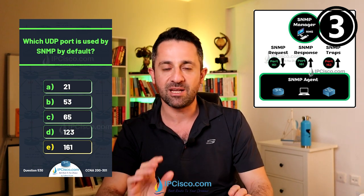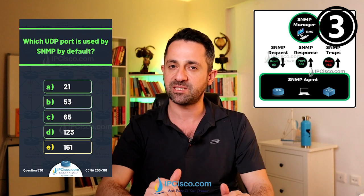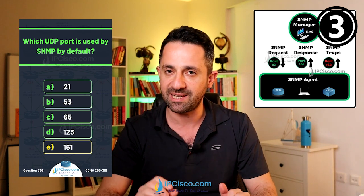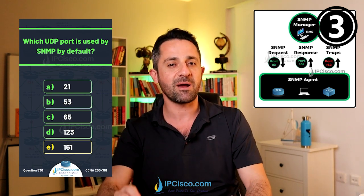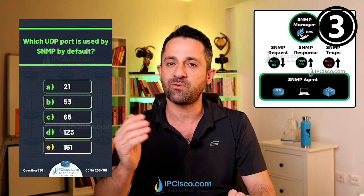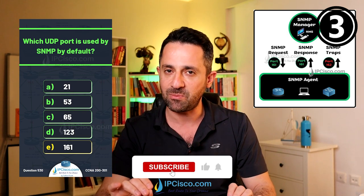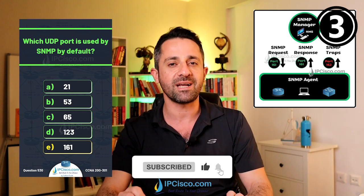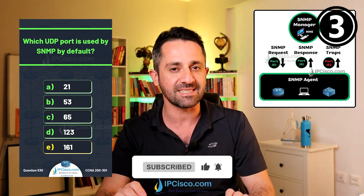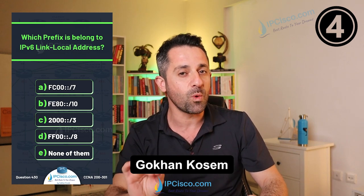Our answer is 161. Port 161 is used by SNMP to send SNMP requests and get SNMP responses from the SNMP agent. However, for trap and inform messages coming from the SNMP agent, another port is used — port 162.